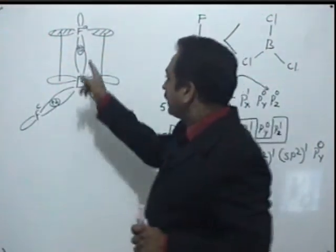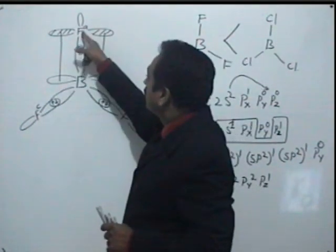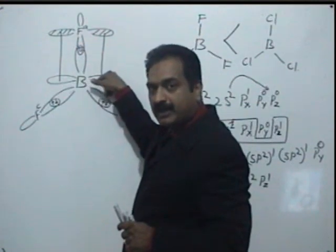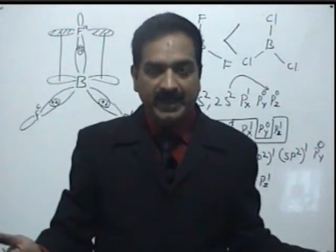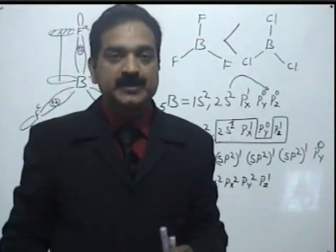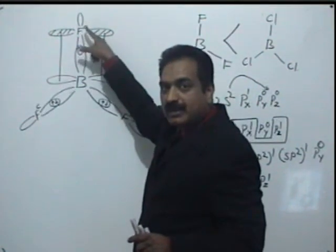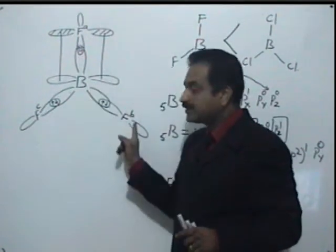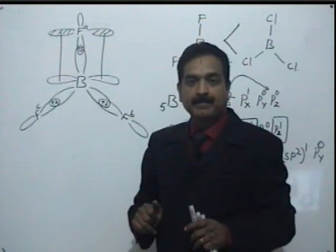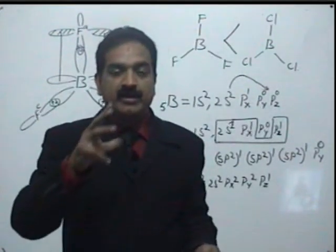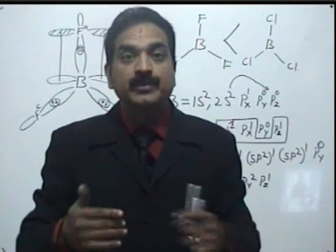However, if only one fluorine — say Fa — forms this back bond with boron, the B–Fa bond length would decrease and its bond energy would increase compared to the other two. But in BF3, all three B–F bonds have the same bond length and same bond energy. This can be explained by resonance: the back bond exists between Fa and boron for some time, then shifts between Fb and boron, then Fc and boron, so that all three bonds are equivalent.